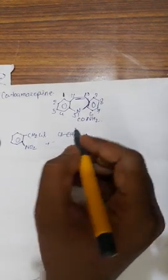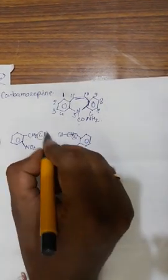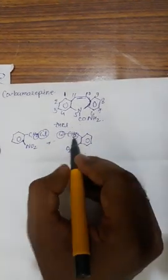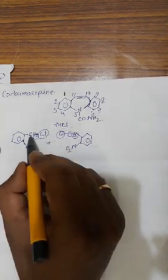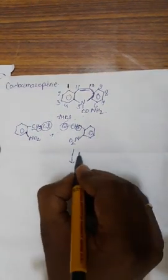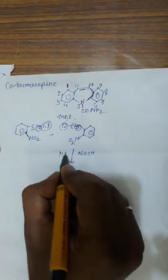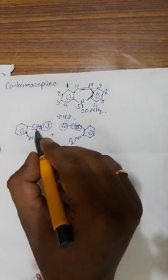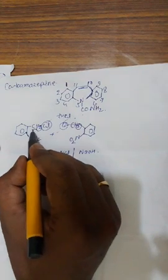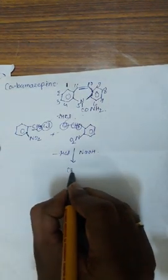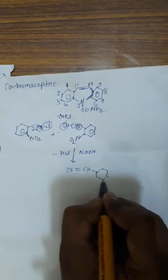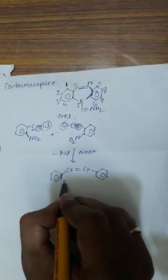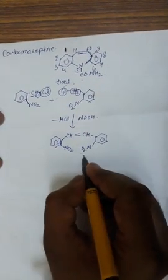From these 2 molecules, 2 molecules of HCl will be removed — one H from one molecule with the Cl of the other. This occurs in the presence of NaOH, as a base is required to remove HCl. After removal of 2 HCl molecules, the two CH2 groups condense to form a CH=CH double bond, giving the first intermediate with two nitro groups on the benzene rings.